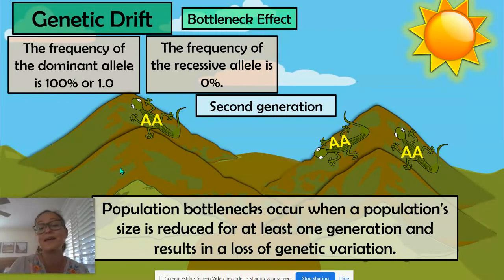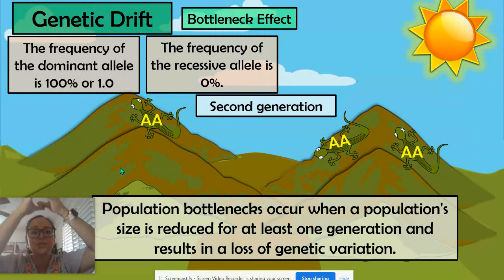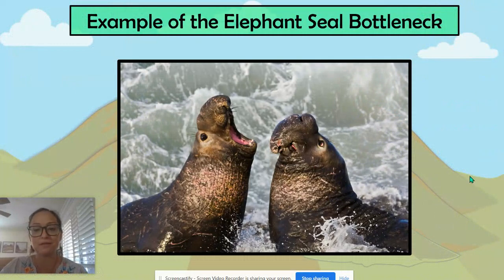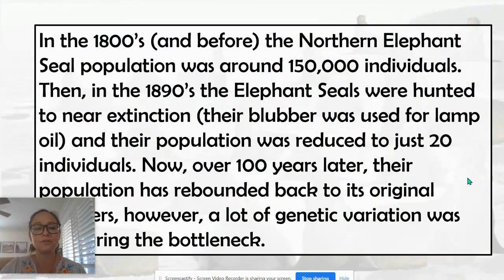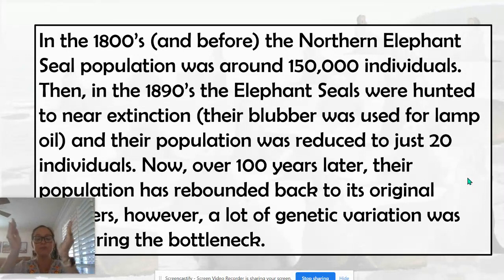The bottleneck effect is not adaptive evolution — it was not natural selection, and not due to fitness or phenotype. A bottleneck effect occurs when a population size is greatly reduced for at least one generation. When you reduce that population to a very small size, all of those individuals who don't survive lose their variation. A real-life example: elephant seals numbered about 150,000 before the late 1800s. They were hunted to near extinction for their blubber used as oil in lamps. By the year 1890, we were down to only 20 elephant seals. Imagine 150,000 reduced to just 20 individuals.